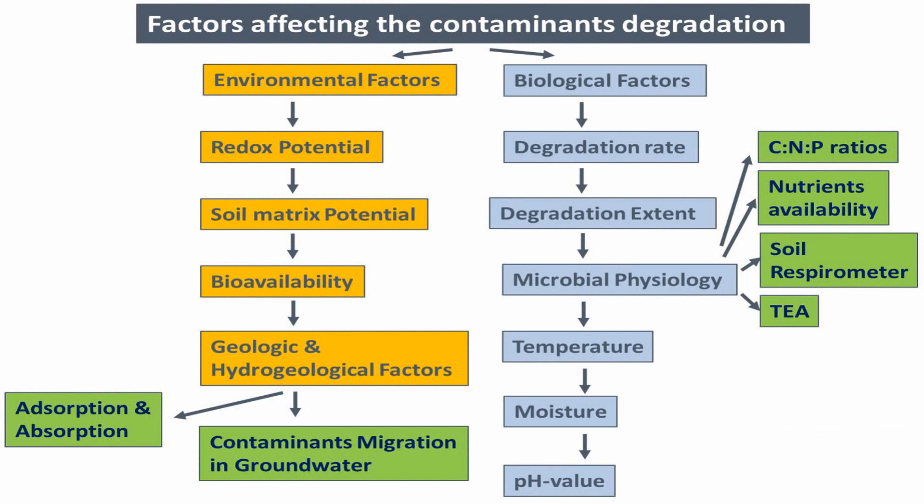We have biological factors already explained before. In this video today we need to explain the environmental factors, which include the redox potential, soil matrix potential, bioavailability, and geological and hydrogeological factors — which include adsorption and absorption and also contaminant migration in groundwater. All of these environmental factors will be explained after the break.